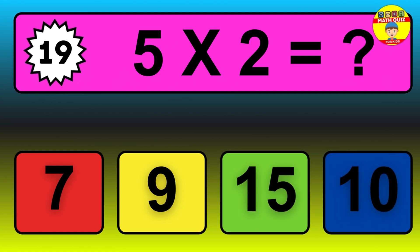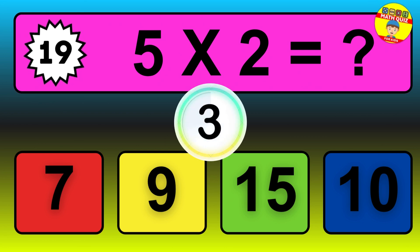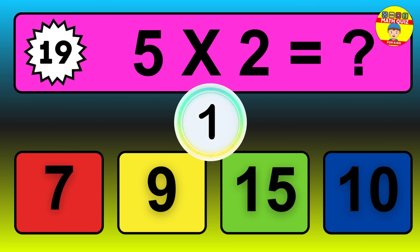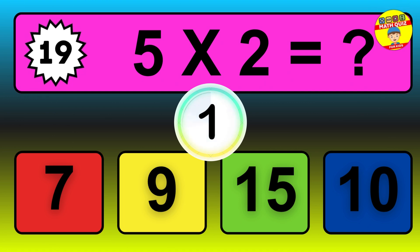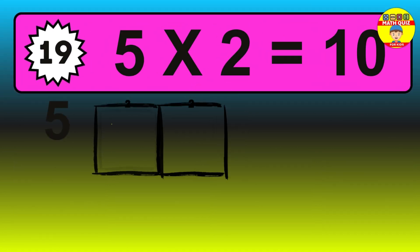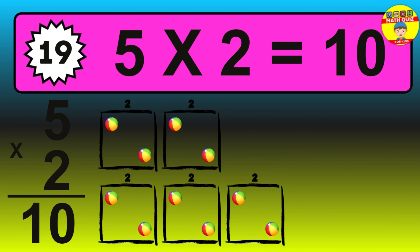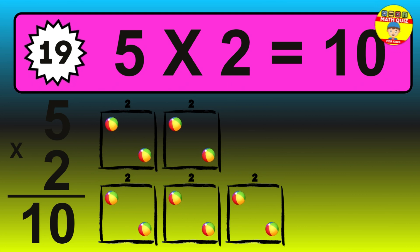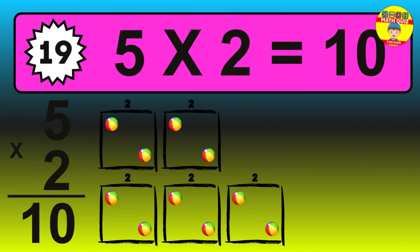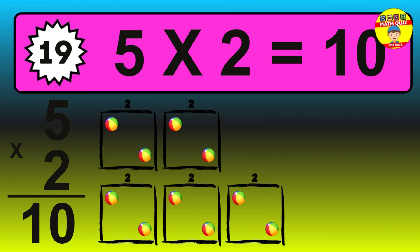Question 19. 5 times 2 equals what? The answer is 5 times 2 is 10. To calculate, we have 5 groups with 2 balls each one. So, how many balls do we have? 10 balls.